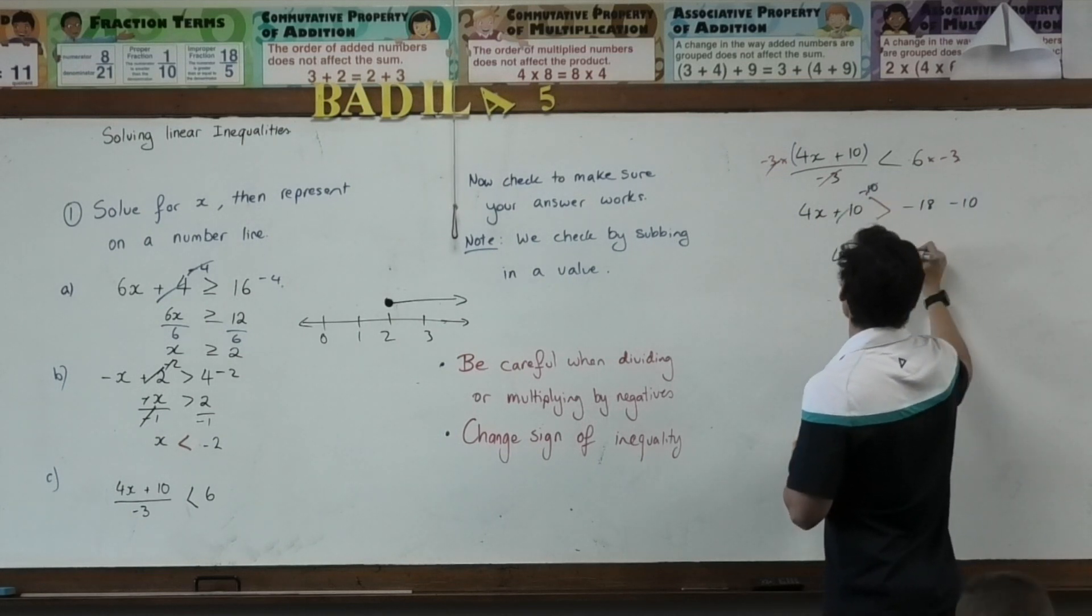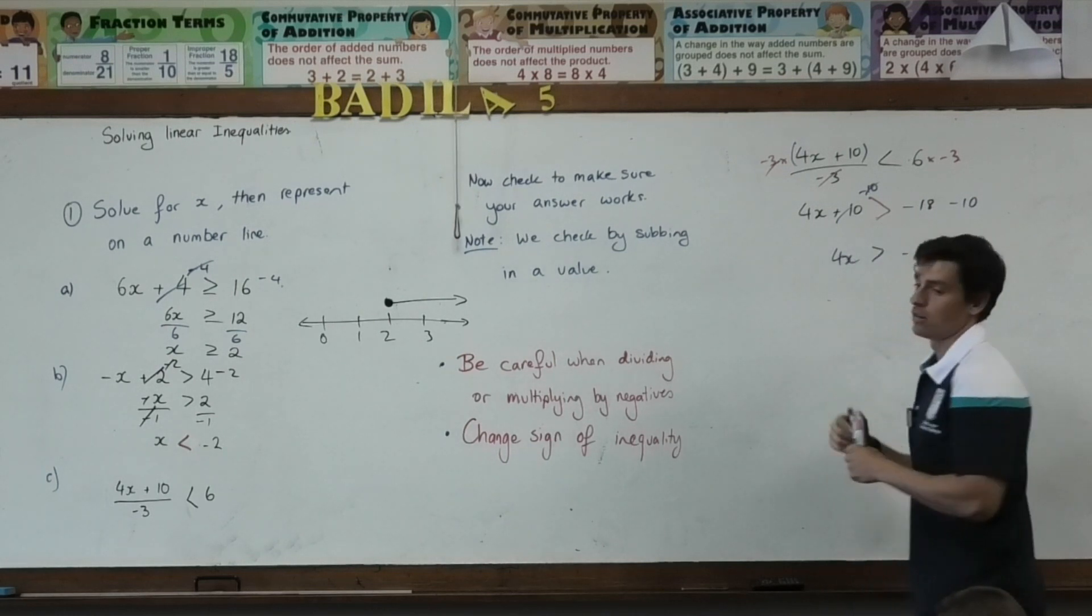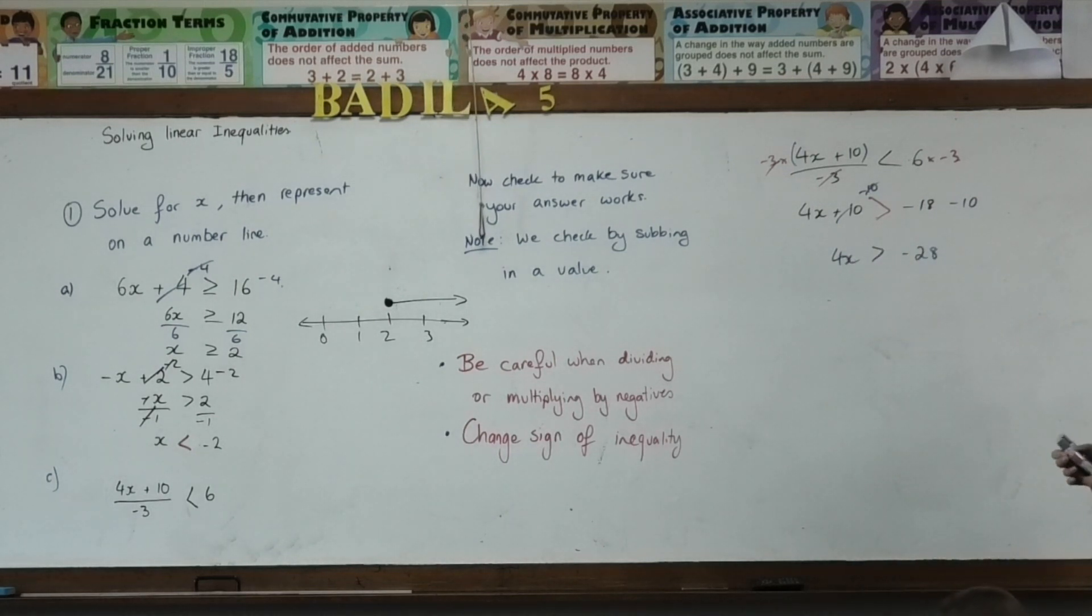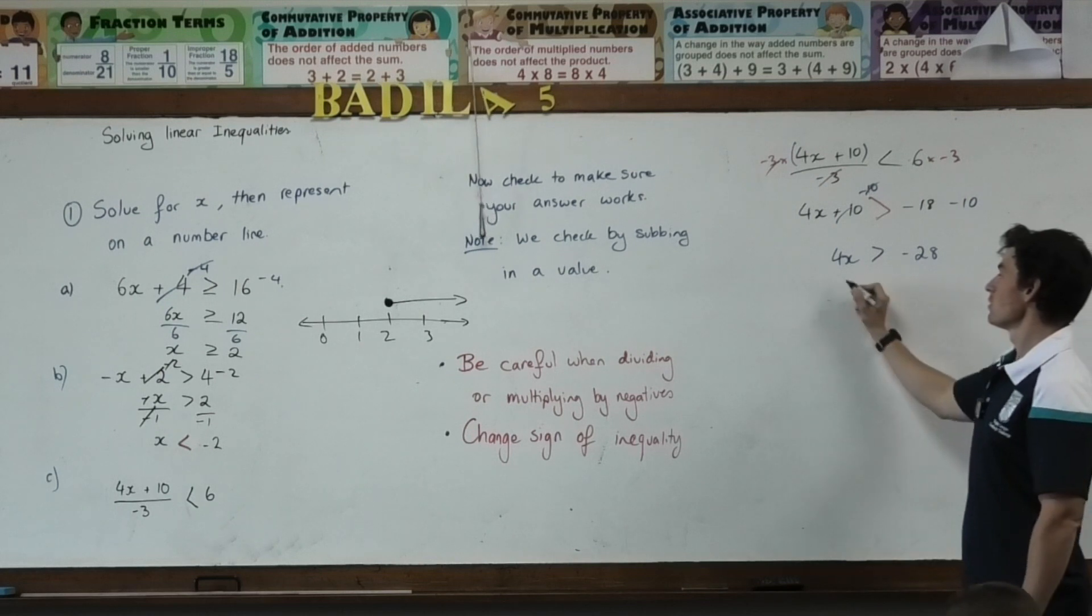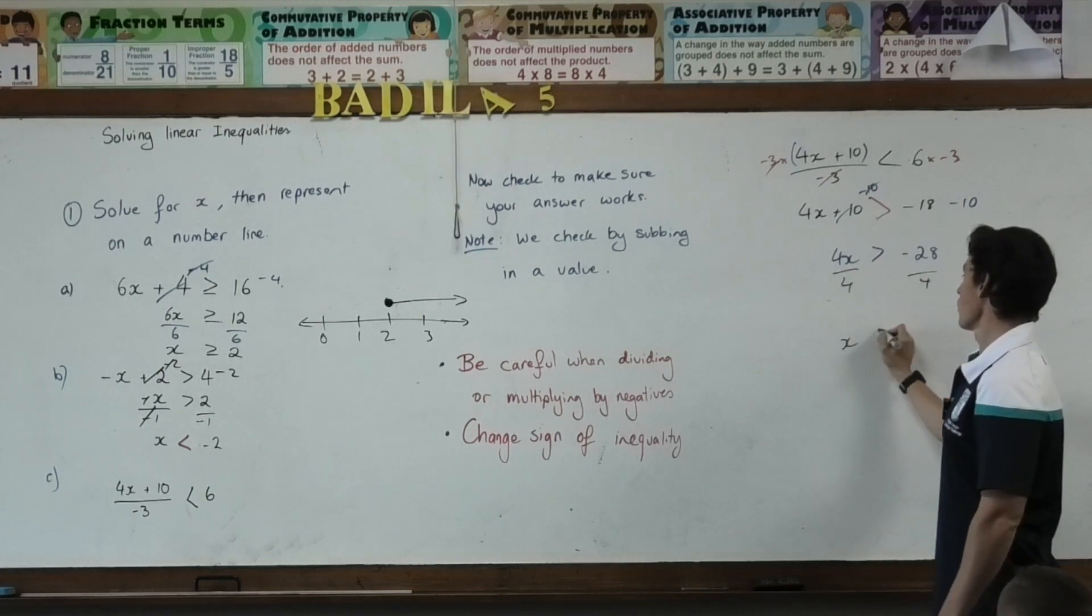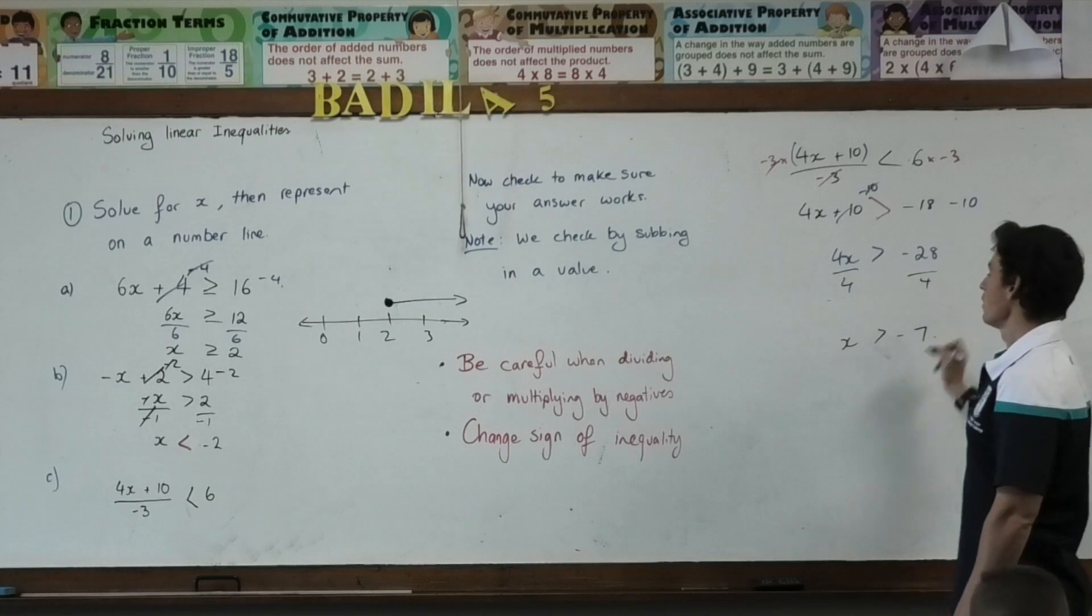4X is greater than negative 28. Last step, Janelle. Divide by four. X is greater than negative 7.